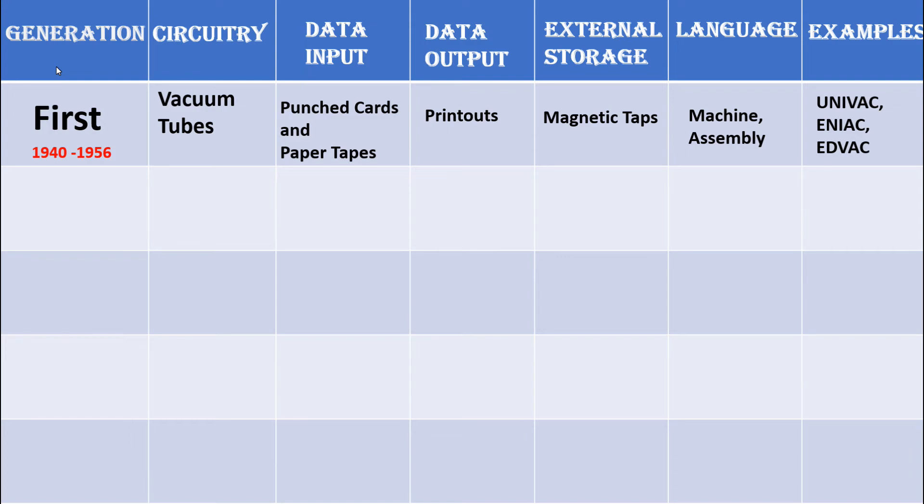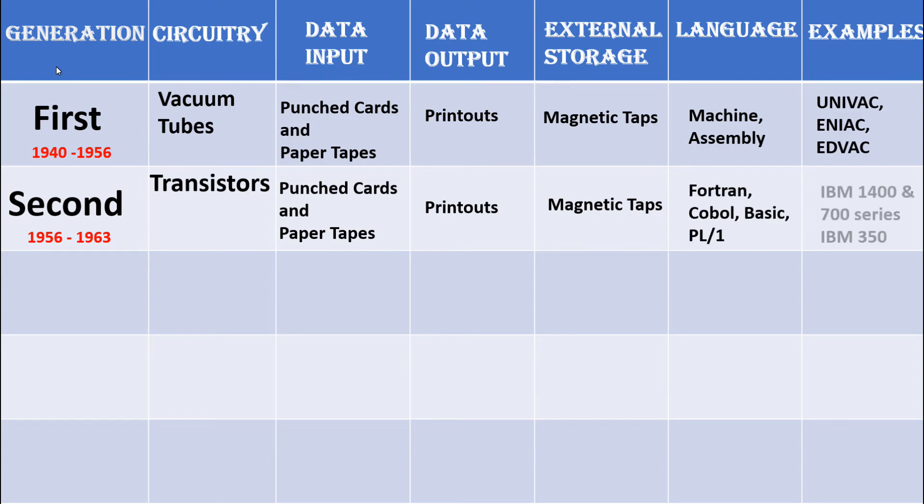are UNIVAC, ENIAC, and EDVAC. Second generation of computers came between 1956 to 1963. They used transistors. For data input, systems used punch cards and paper tape; output was given as printouts. Magnetic tapes were used for external storage. Languages used were FORTRAN, COBOL, BASIC, and PL/1. Examples are IBM 1400 and 700 series, IBM 350.